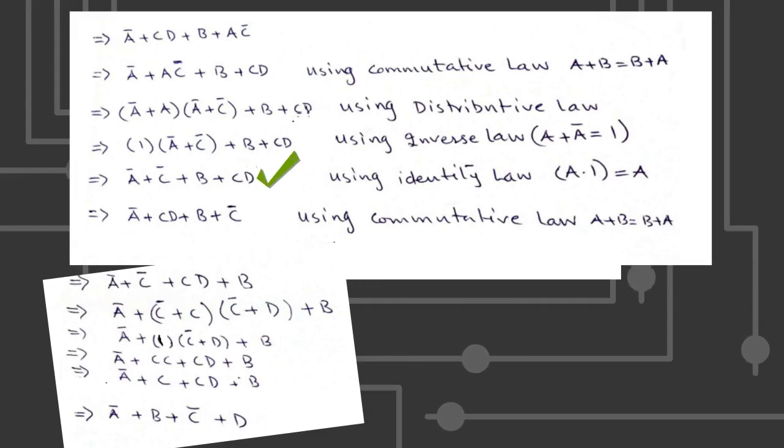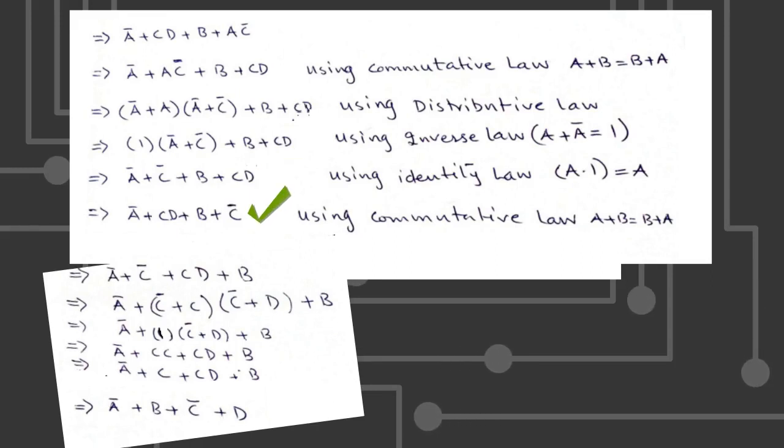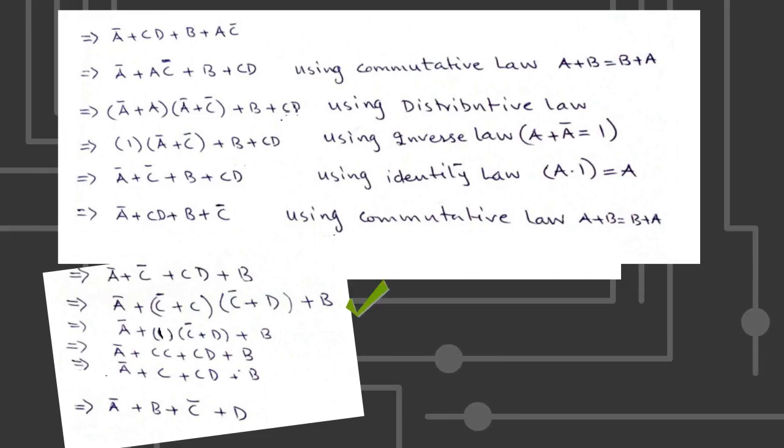Now we have A bar plus C bar plus B plus CD. Again, we will use commutative law to rearrange. At this stage we can apply distributive law and inverse law. At the end, our simplified expression is A bar plus B plus C bar plus D.